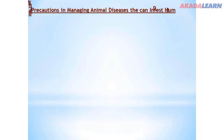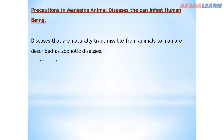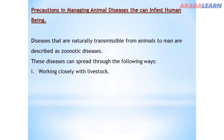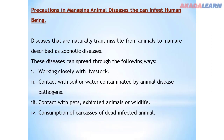Precautions in managing animal diseases that can infest human beings. Diseases naturally transmissible from animals to man are described as zoonotic diseases. These diseases can spread through: working closely with livestock; contact with soil or water contaminated by animal disease pathogens; contact with pets, exhibited animals, or wildlife; consumption of carcasses of dead or infected animals; and consumption of unpasteurized dairy products.